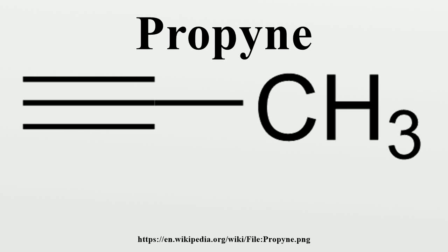Propaner is an alkane with the chemical formula CH3CCH. It was a component of MAP gas, along with its isomer propidine, which was commonly used in gas welding.